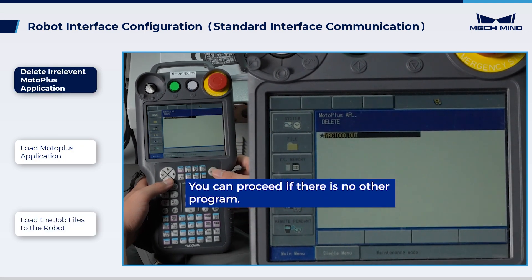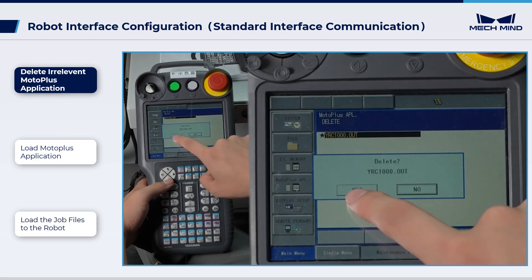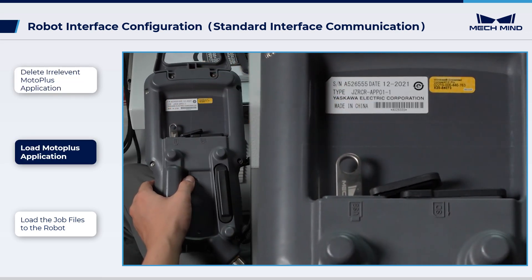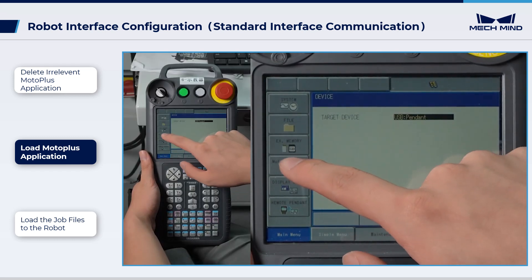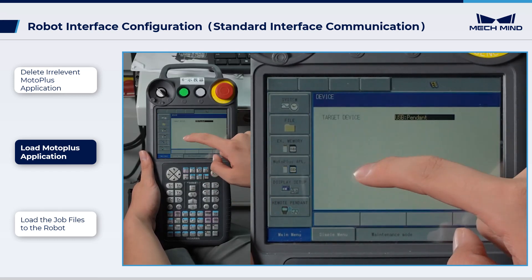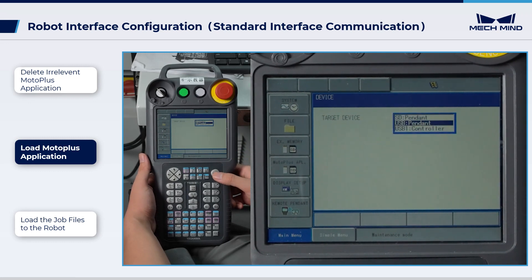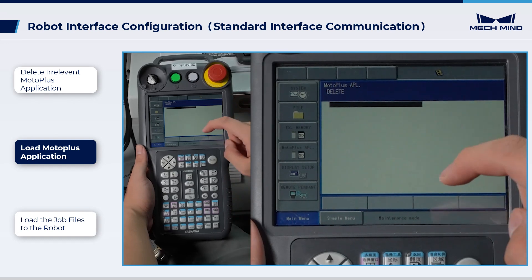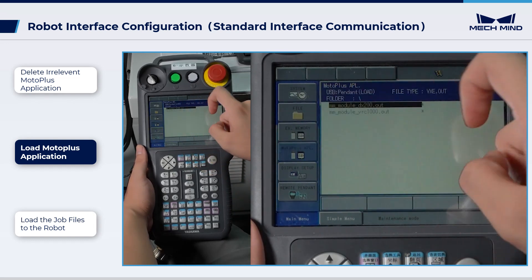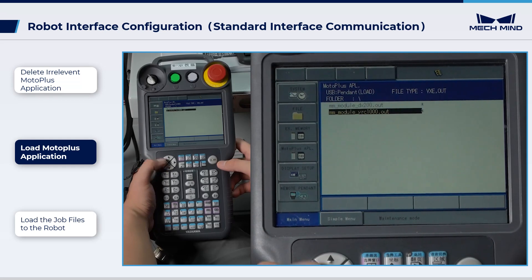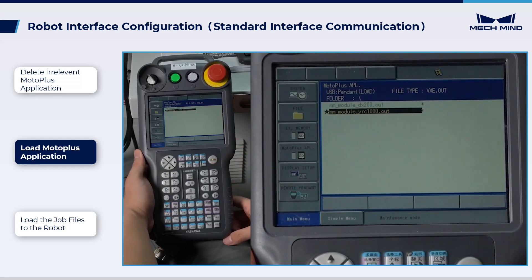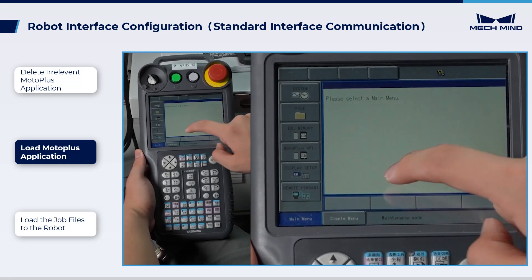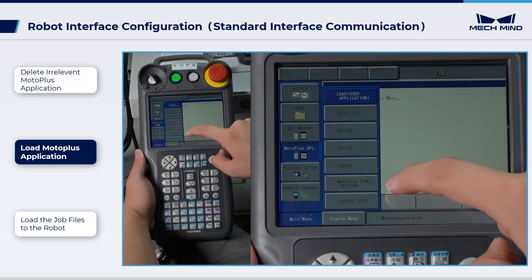Choose Delete to delete the irrelevant programs. Insert the flash drive into the USB port on the back of the Teach pendant. On the Teach pendant, go to MotoPlus APL, Device, USB Pendant. Then select MotoPlus APL, Load, User Application. Choose MM Module YRC 1000 Out and press Enter to complete the loading of the MotoPlus application. After the installation is complete, you can find the installed files under File List.